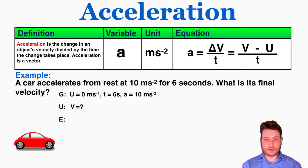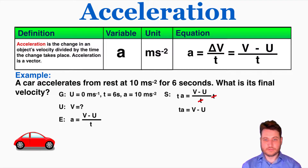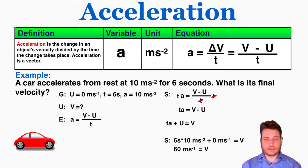The equation we're using is the acceleration equation. To solve for the final velocity, I need to isolate V by multiplying both sides by t — those cancel out — and I'm left with: final velocity equals acceleration times time plus the starting velocity. Substituting the numbers in, I find that the final velocity is 60 meters per second.